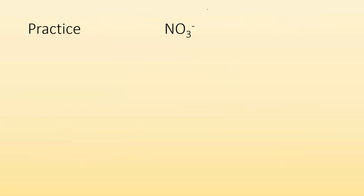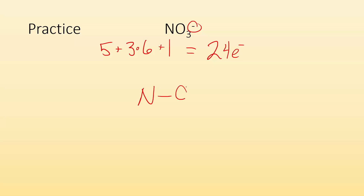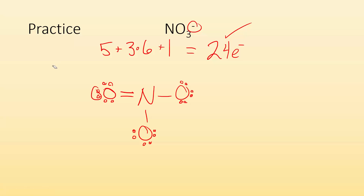Let's do a little practice. NO3 minus. First, sum up all the valence electrons: nitrogen has five, we have three oxygens each with six, and the minus charge gives me one more electron — so I have a total of 24 valence electrons. Put nitrogen in the middle, single bond to all the oxygens, then complete the octets. Once I've placed all 24 electrons, this nitrogen doesn't have an octet — it's only got six. So I'm going to make a multiple bond with one of these oxygens. But why that oxygen? Because I'm able to ask that question, it tells me that I have resonance.